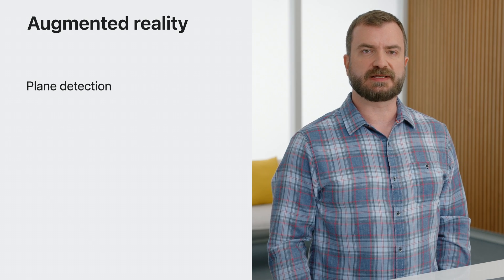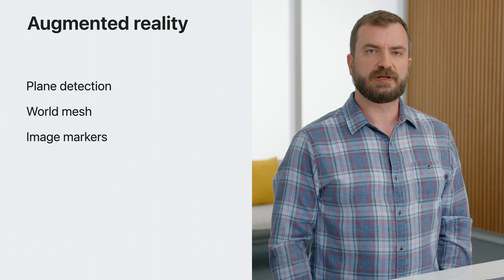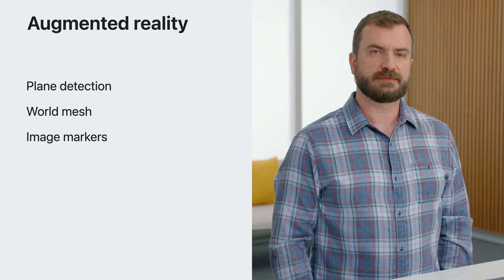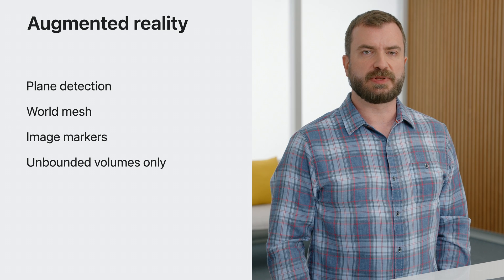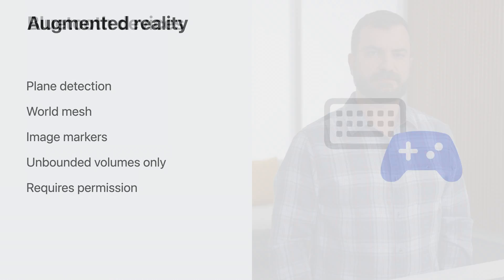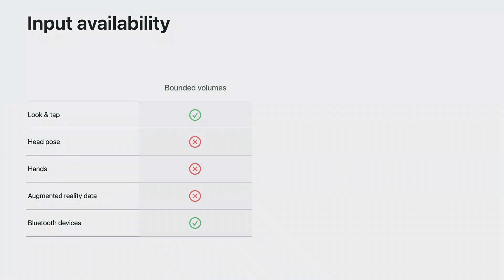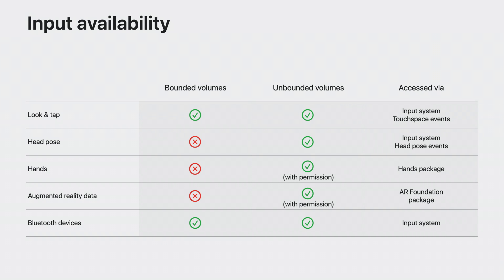Augmented reality data such as detected planes, the world mesh, and image markers are available through ARKit and Unity's AR Foundation. Like hands and head pose, AR data is only available in unbounded volumes and requires extra permissions. Bluetooth devices such as keyboards, controllers, and other supported devices are available for you to access through Unity's input system. Because some types of input are only available in unbounded volumes, you'll need to decide what type of interaction you would like to build. Using look and tap will allow your content to work in a bounded volume that can live alongside other applications. But if you need access to hand tracking or augmented reality data, you'll need to use an unbounded volume and request permissions.